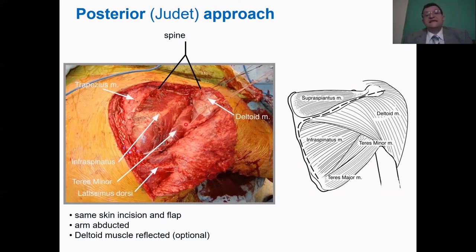And one of the good tricks is to lower the diathermy to one. And if you touch the infraspinatus, it will contract independently of the teres minor and you can see clearly the plane between the two muscles.